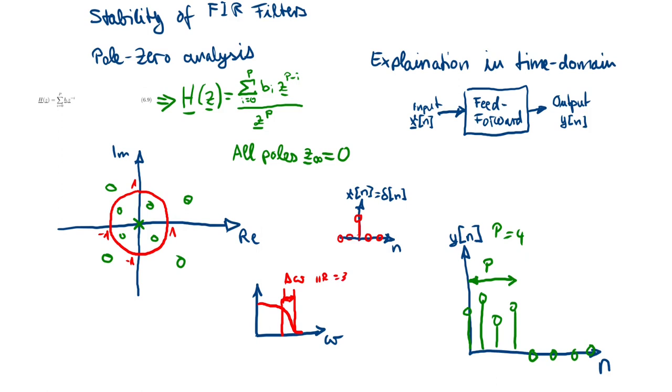But if you choose to implement the same characteristic with an FIR filter, you probably need a filter order of let's say 9. This is just an example. So you need to add more delay elements, and each delay element costs memory, costs processing power.